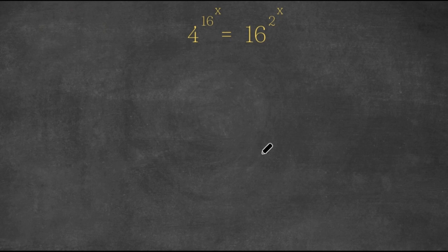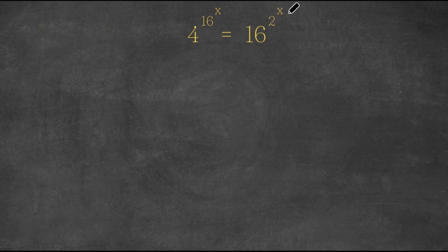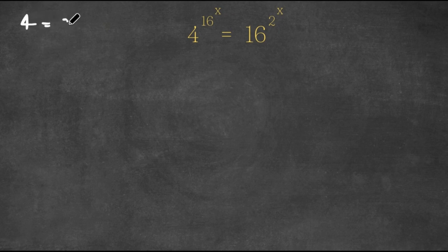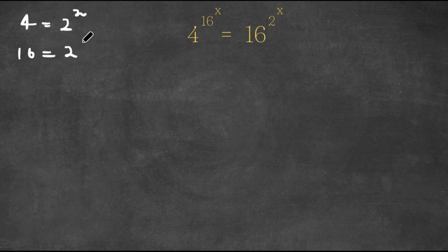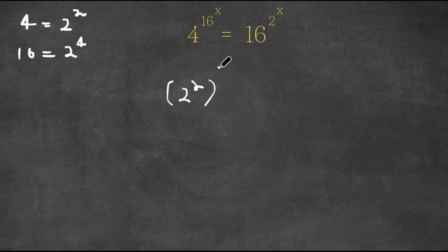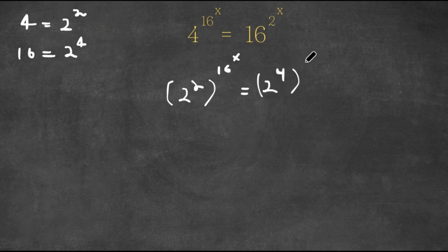Hey guys, welcome back to Qlik Academics. In today's video I'm going to be teaching you guys how to solve this exponential equation. So we have 4 to the power of 16 to the power of x is equal to 16 to the power of 2 to the power of x. What I'm first going to do is rewrite both of these bases, 4 and 16, as powers of 2. Now 4 is equal to 2 squared and 16 is equal to 2 to the power of 4. So now I'm going to replace 4 and 16 with these, giving us 2 squared to the power of 16 to the power of x, equal to 2 to the power of 4 to the power of 2 to the power of x.